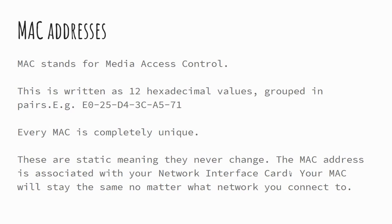MAC addresses are always completely unique — every network card has a unique identifier. Both can be used for routing data. Switches use MAC addresses to distribute data, whereas routers use IP addresses. That's because routers connect networks together and use IP addresses, while switches connect devices and therefore use the MAC address.